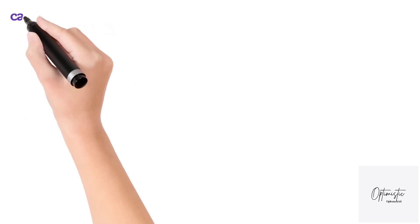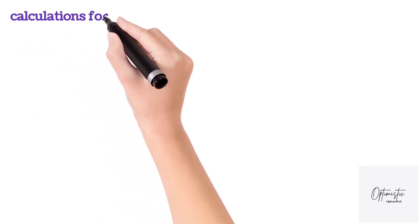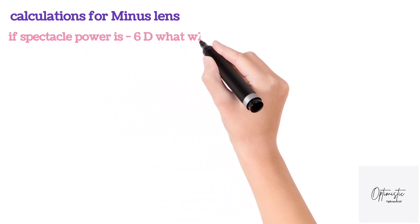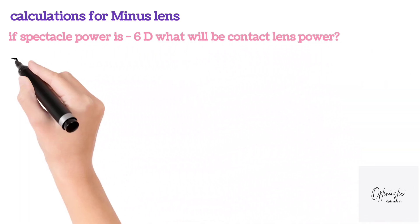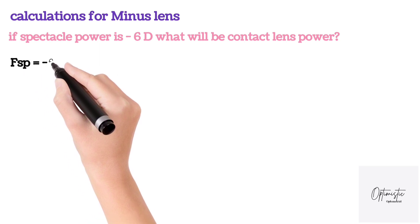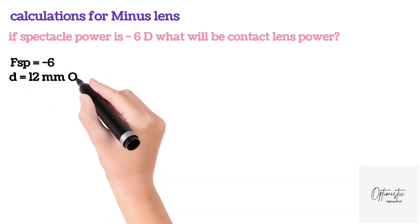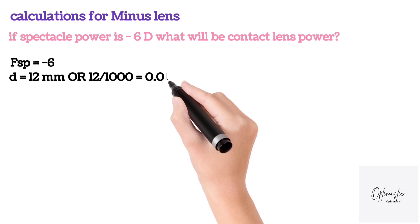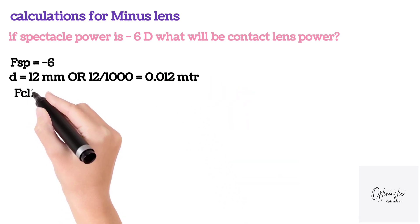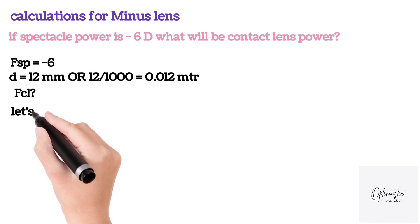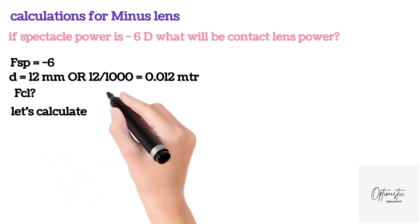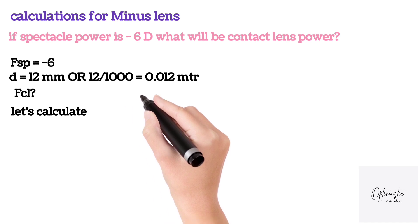Let's calculate the contact lens power using this formula. Here's the example: if the spectacle power is minus 6 diopters, what will be the contact lens power? The spectacle power is minus 6 diopters, and the vertex distance is 12 mm, or 0.012 meters. We need to calculate the contact lens power.